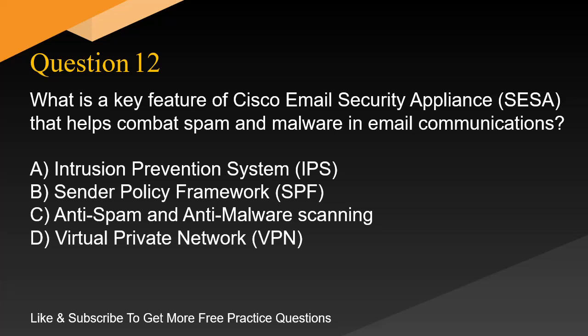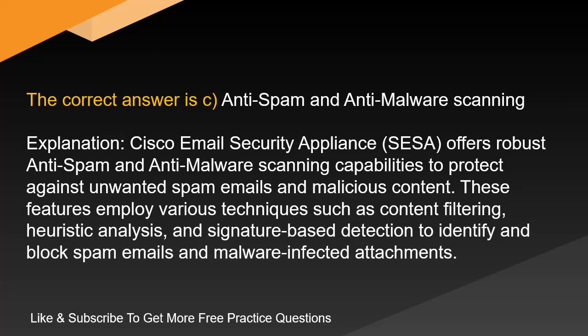Question 12. What is a key feature of Cisco Email Security Appliance (SESA) that helps combat spam and malware in email communications? A. Intrusion Prevention System (IPS). B. Sender Policy Framework (SPF). C. Anti-spam and anti-malware scanning. D. Virtual Private Network (VPN). The correct answer is C. Anti-spam and anti-malware scanning. SESA offers robust anti-spam and anti-malware scanning capabilities to protect against unwanted spam emails and malicious content. These features employ techniques such as content filtering, heuristic analysis, and signature-based detection to identify and block spam emails and malware-infected attachments.